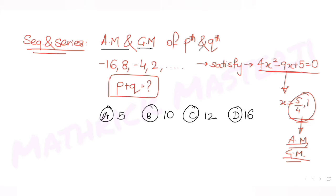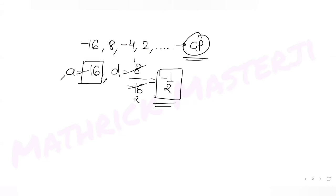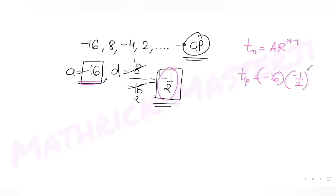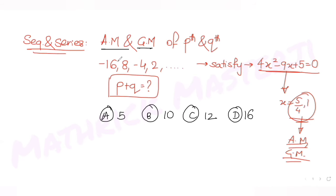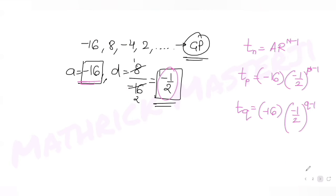Since we need the pth and qth terms of this GP, we use the nth term formula: a·r^(n-1). The pth term is -16 × (-1/2)^(p-1) and the qth term is -16 × (-1/2)^(q-1). The arithmetic mean of the pth and qth terms is (pth term + qth term) / 2.